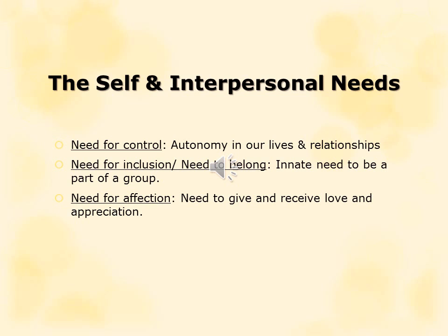The need for inclusion manifests in family groups, political affiliations, and even gangs — the need to belong not only for protective factors, but to identify with others and feel that one belongs to a group. It's an innate need within all of us. Finally, the need for affection is simply the need to give and receive love and appreciation. This may vary in certain individuals, but at the end of the day all of us have an innate need for affection.